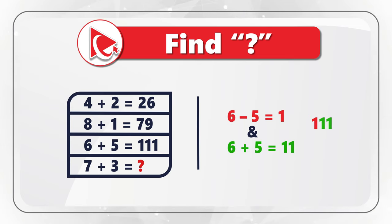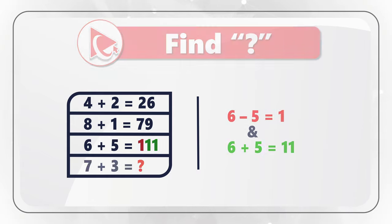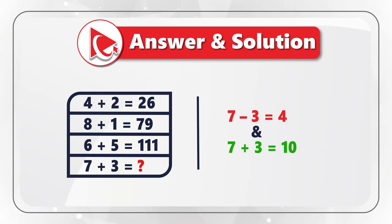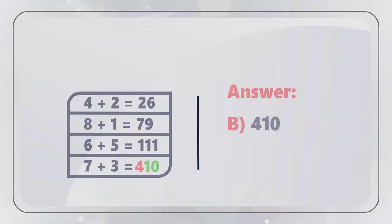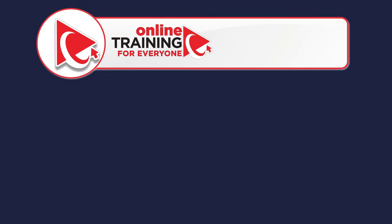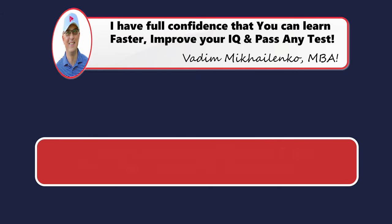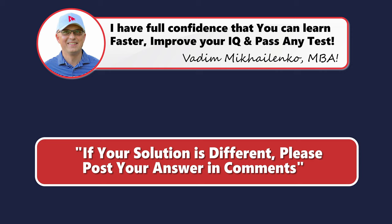Now we can calculate the final fourth expression: 7 minus 3 gives the first digit 4, and 7 plus 3 gives 10. So the correct answer is choice B — 410. Did you figure it out, or did you find a different solution? Please make sure to share your solution and rationale in the comments.